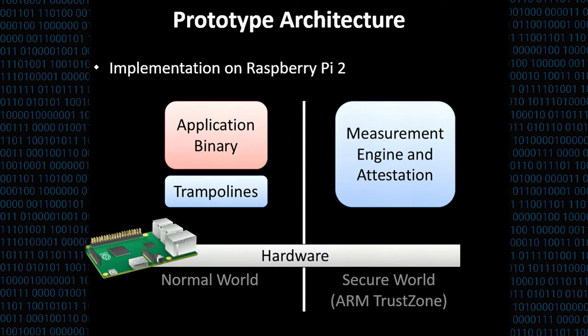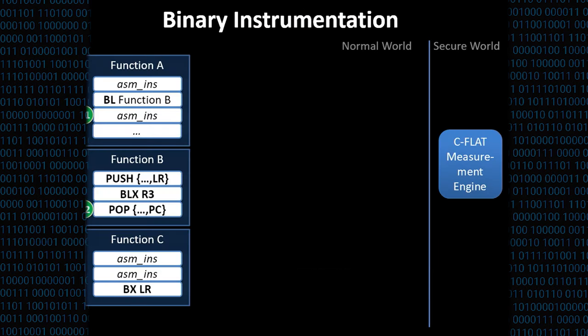Now, let's turn to the implementation of C-FLAT. For our prototype implementation, we chose Raspberry Pi 2 because it offers a nice API for our trust zone, our trust anchor in C-FLAT. In general, the architecture can be divided into two worlds. We have the normal world where the application is executing and the secure world where the measurement is taken. The application is instrumented based on binary instrumentation techniques and whenever there is a control flow transition, we redirect the execution flow to one of the trampolines. The trampolines save the context, call the measurement engine, and then the control flow is redirected back to the application binary.